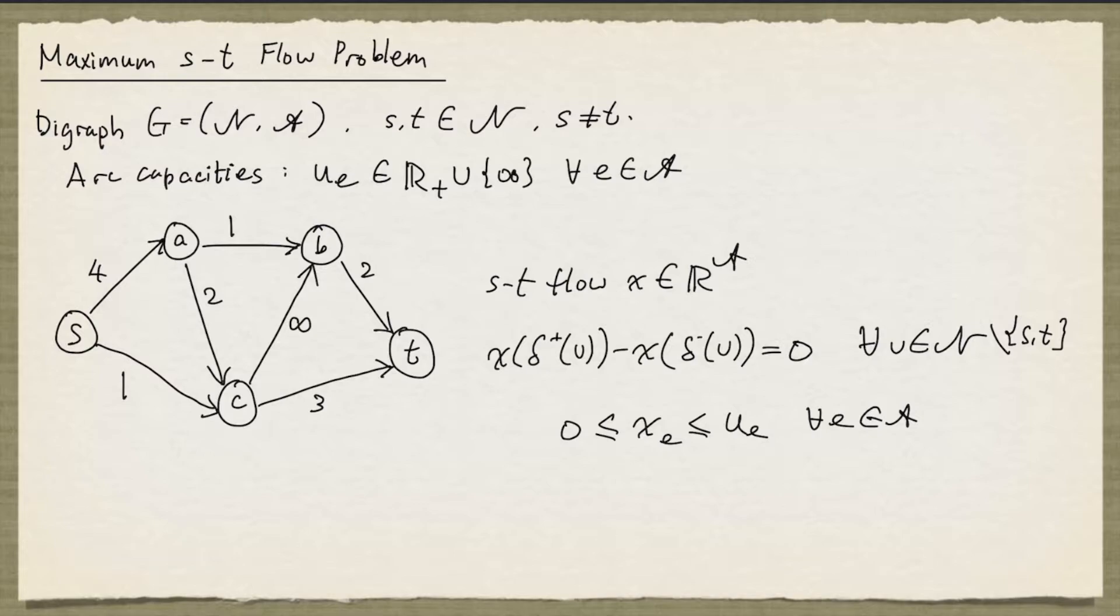Let's unpack the notation here. Delta plus of v denotes the set of arcs that have v as the tail. Delta minus of v denotes the set of arcs that have v as the head. If we look at node A, delta plus of A will consist of the arcs AB and AC, and delta minus of A will just contain the arc SA. Here, x of delta plus of V means we sum up the components of x indexed by the elements in delta plus of V.